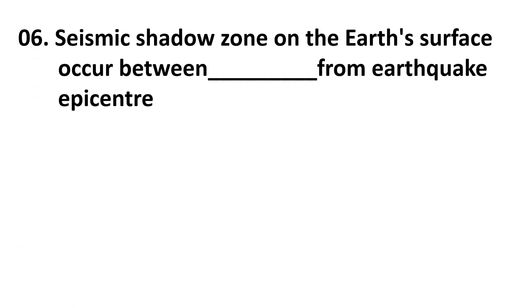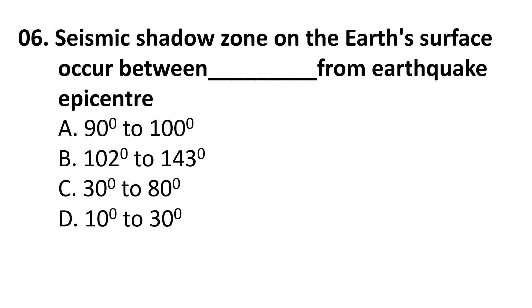Sixth question: seismic shadow zone on the earth's surface occur between what distance from the earthquake epicenter? Choices are A 90 to 100 degrees, B 102 to 143 degrees, C 30 to 80 degrees, D 10 to 30 degrees. The correct answer is B, 102 degrees to 143 degrees.